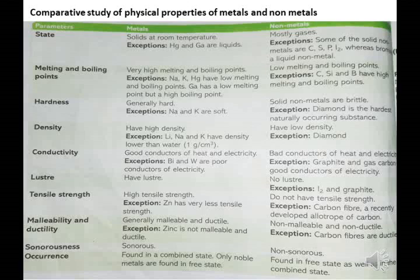Carbon (C), Silicon (Si), and Boron (B) have high melting and boiling points. Hardness: metals are generally hard. Non-metals are very soft. Exception — Sodium (Na) and Potassium (K) are softer metals. Exception in non-metals: diamond is the hardest naturally occurring substance.